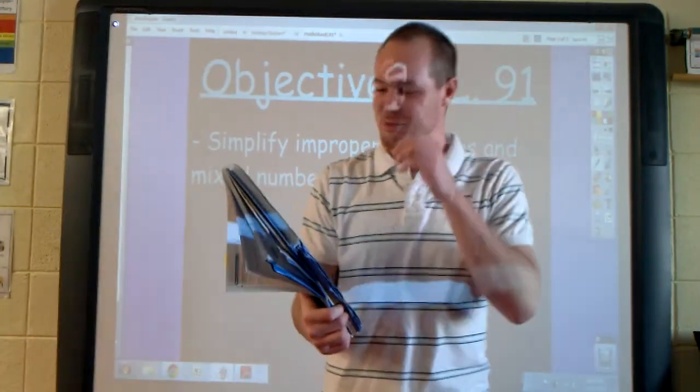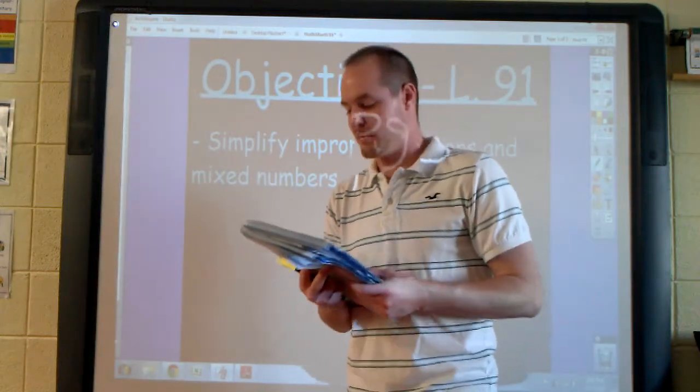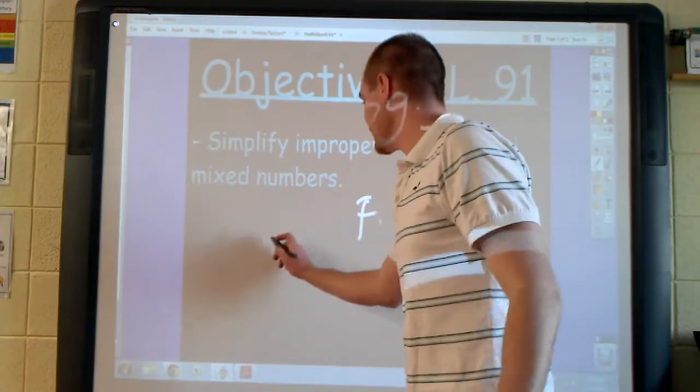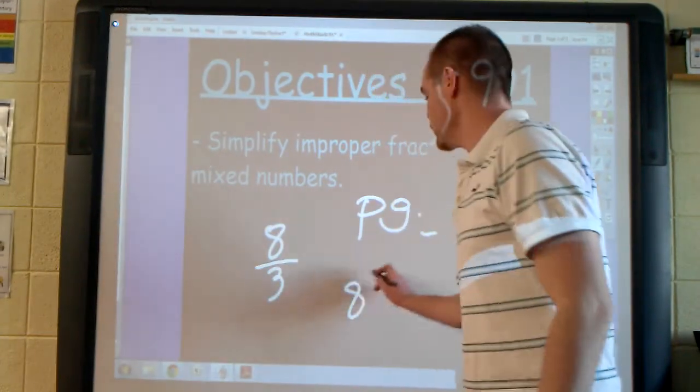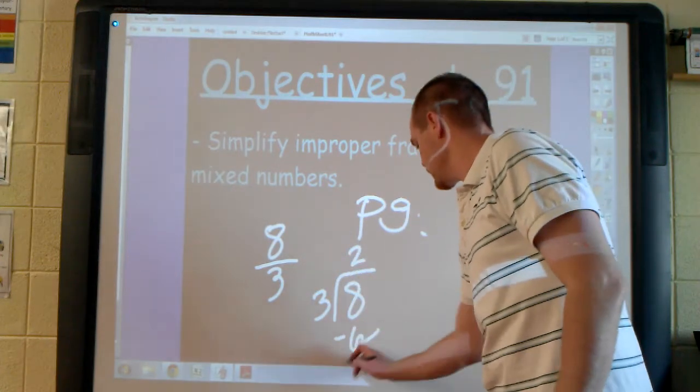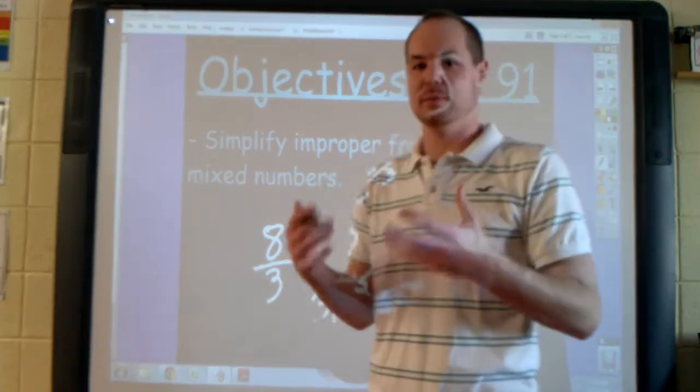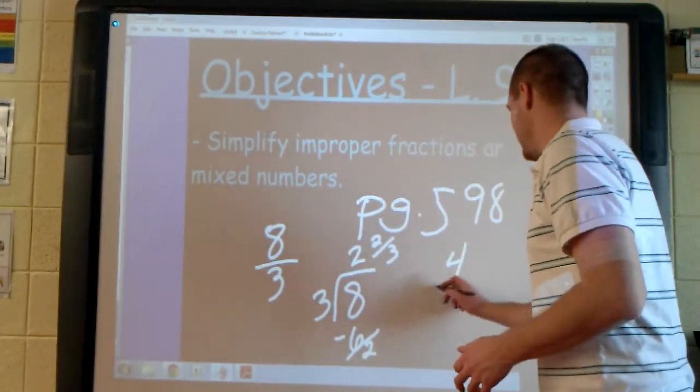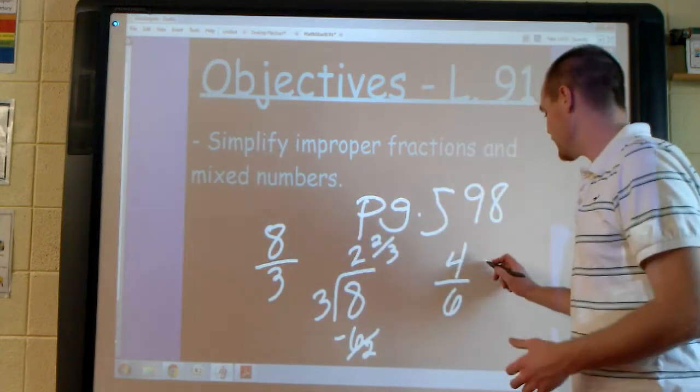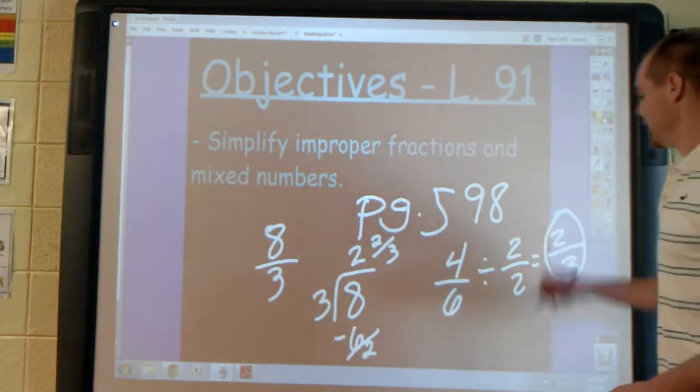We have learned two ways to simplify fractions. We have converted improper fractions to whole numbers or mixed numbers, and we have reduced fractions. We've divided the numerator by the denominator and reduced it. We've also had fractions that need to be reduced, such as 4/6. We've found the greatest common factor, divided by that factor, and got a reduced fraction of 2/3.